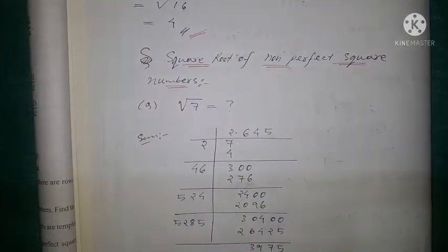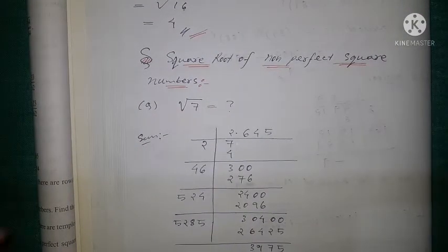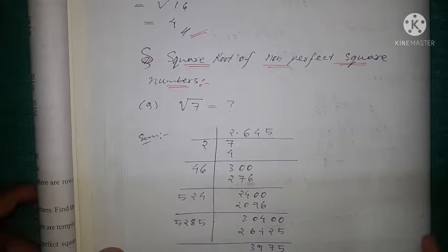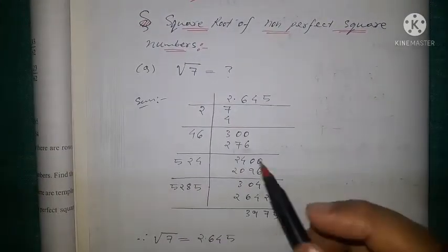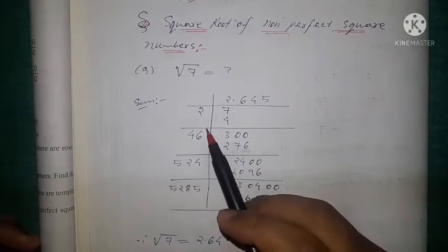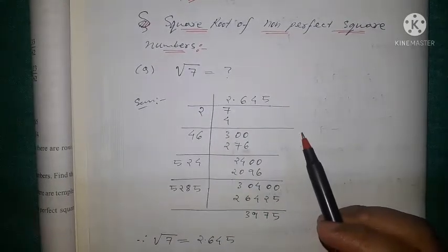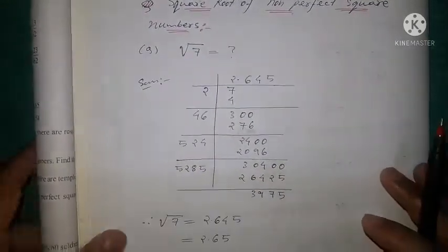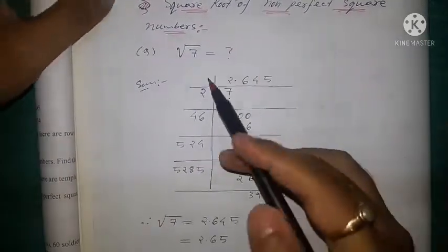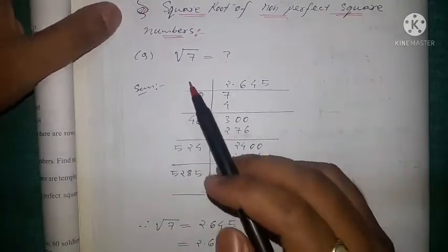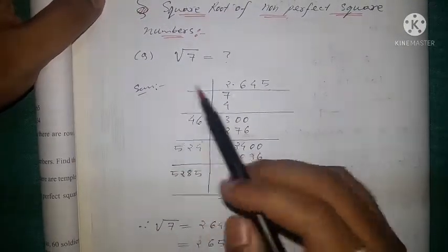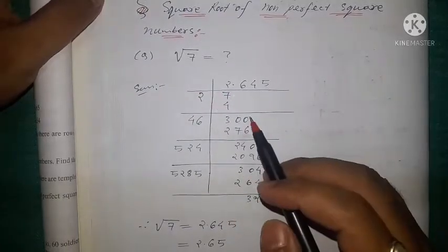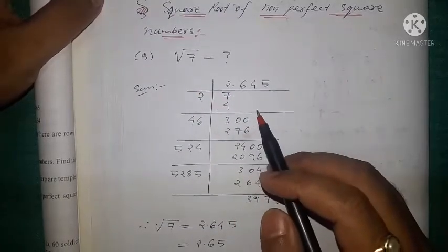Good morning children. Today we will discuss the square root of non-perfect square numbers — that means the square root of numbers which are not perfect squares. For example, let us take one question: we need to find the square root of 7. As we know, 7 is not a perfect square, so we will use the long division method.